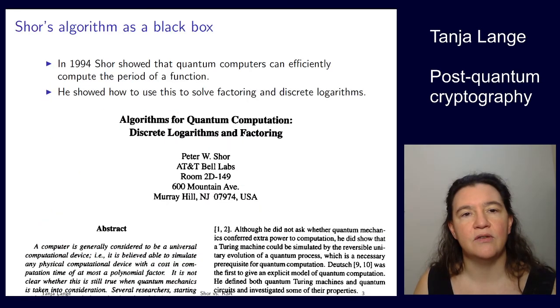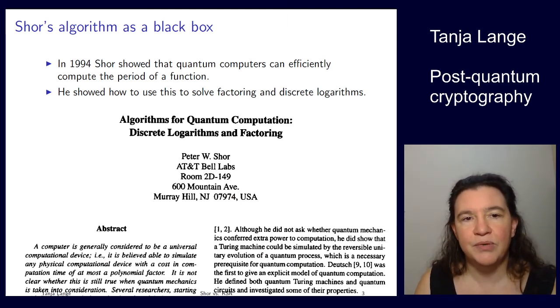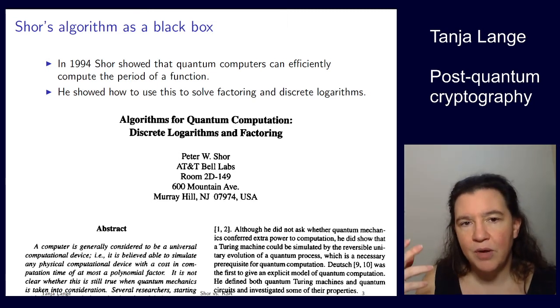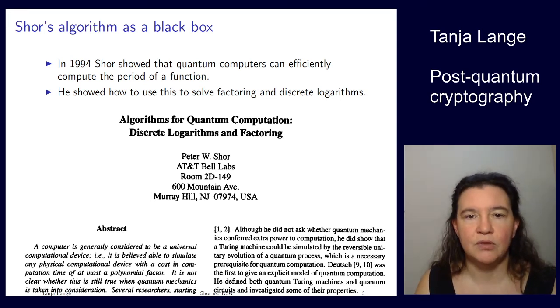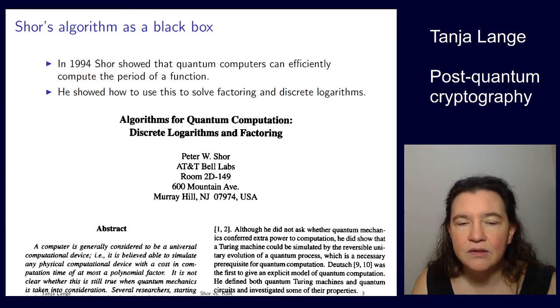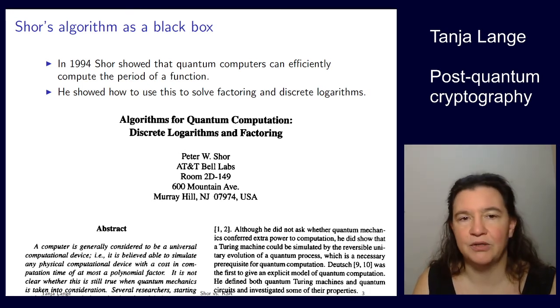Now what Shor observed in 1994 is that quantum computers can efficiently compute the period of a function. And he showed that this holds for actual periods like modulo n can do this. And he then showed how to use this property to solve factoring and discrete log. So here's a screenshot from his paper. So he showed that this can break the cryptosystems that we know. At that point, elliptic curves were less popular, so he didn't put this into the title. But it's really breaking the discrete logarithm problem. So it doesn't matter what you want to instantiate it with, whether it's finite fields or elliptic curves. It's all broken by Shor's algorithm.